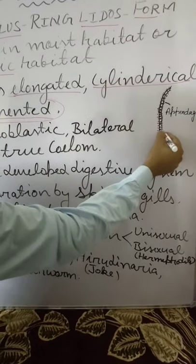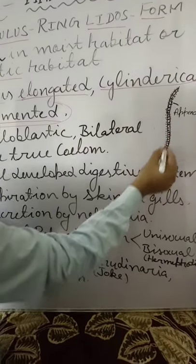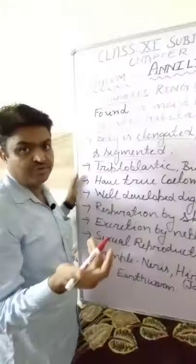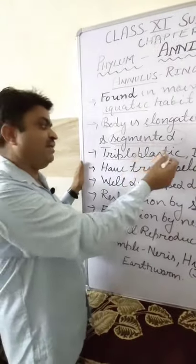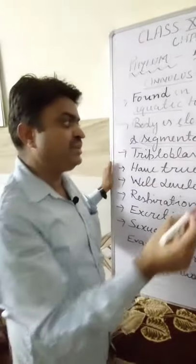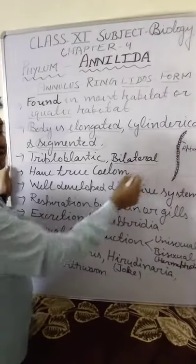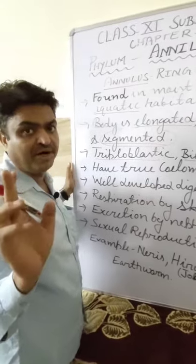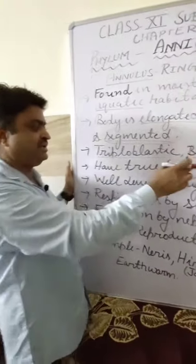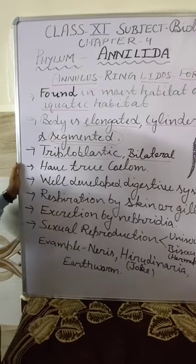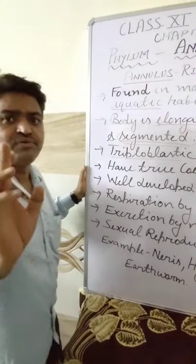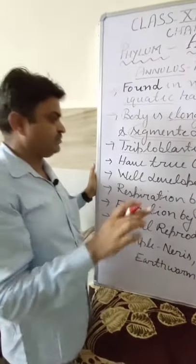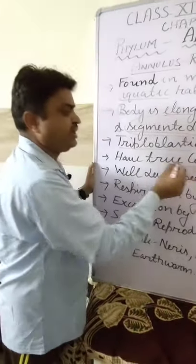Annelids means they have the ring-like structure around their body. They are triploblastic — they have the ectoderm, endoderm, and mesoderm. They also have bilateral symmetry; we can easily divide them into two equal parts, so we can say they have bilateral symmetry. They also have a true coelom — a body cavity.